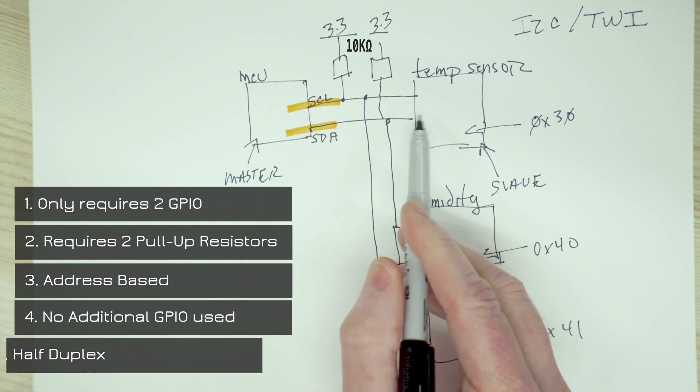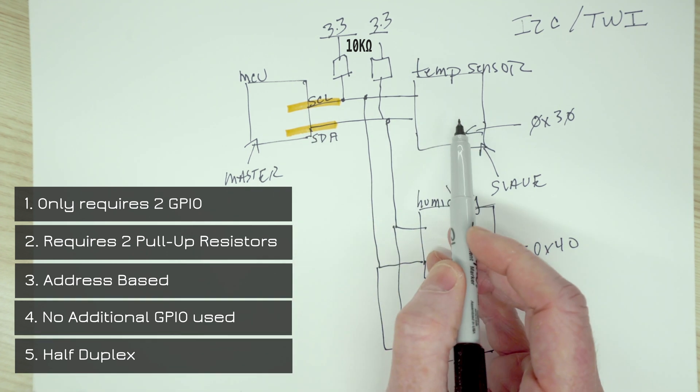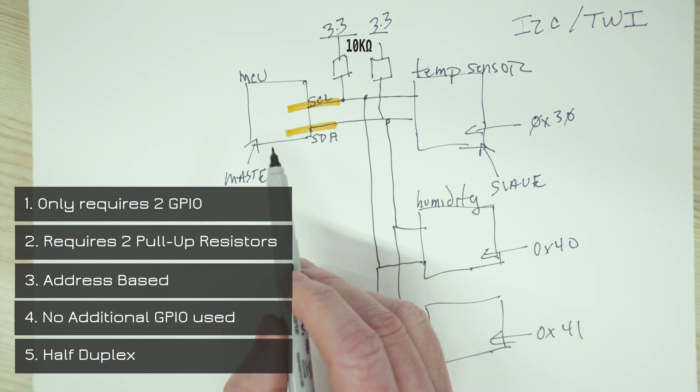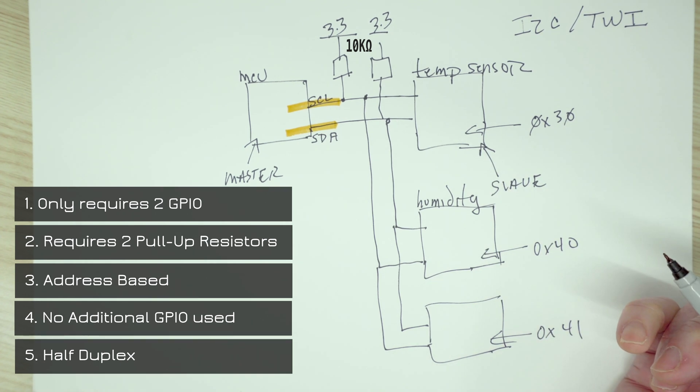The final point is that this is a half-duplex communication, which means that we can only transmit or receive, but we can't do them both at the same time. Ultimately, that's why it's referred to as half-duplex.